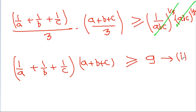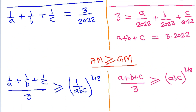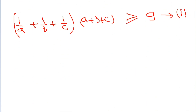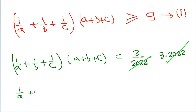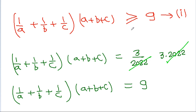Suppose this is equation 1. We have 1/a + 1/b + 1/c = 3/2022 and a + b + c = 3 × 2022. If we multiply these two terms, we get (1/a + 1/b + 1/c)(a + b + c) = (3/2022) × (3 × 2022), and 2022 cancels, giving us (1/a + 1/b + 1/c)(a + b + c) = 9.